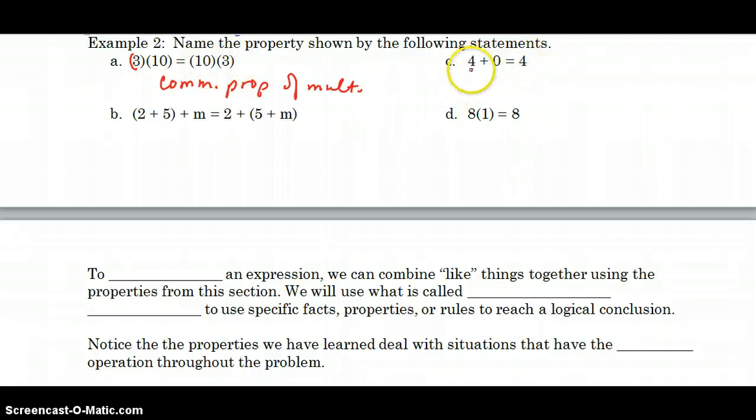4 plus 0 equals 4. 4 is on both sides, so that's an identity. Are we adding? Yes. So it's the additive identity.